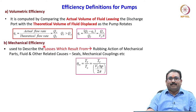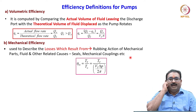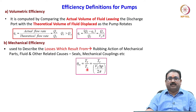Mechanical efficiency is used to describe losses resulting from the rubbing action of mechanical parts, fluid, and other related causes like seals, mechanical couplings, etc. Mechanical efficiency is defined as the ratio of theoretical torque to actual torque, where actual torque we already know is VT into delta P by 2π.